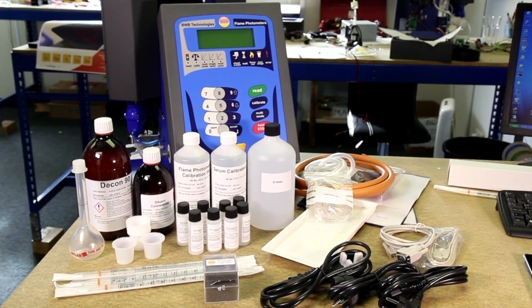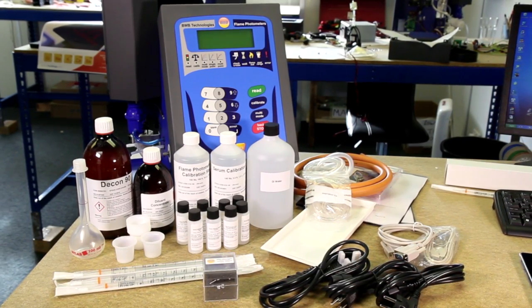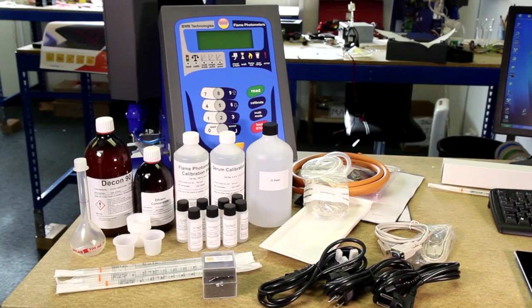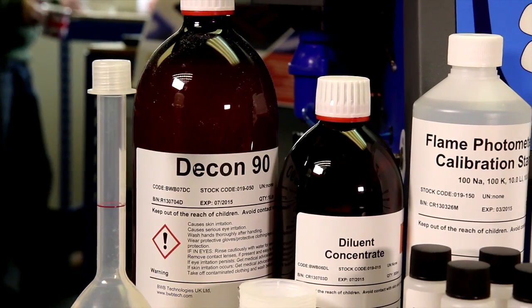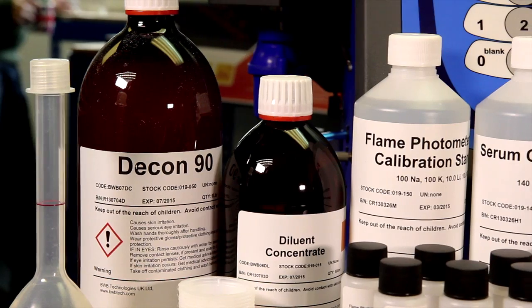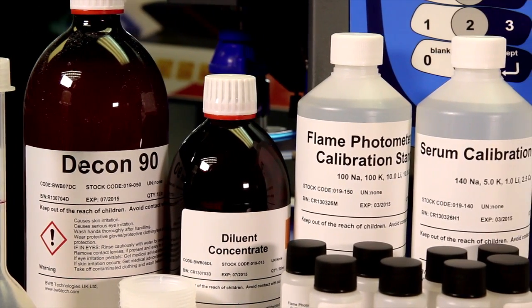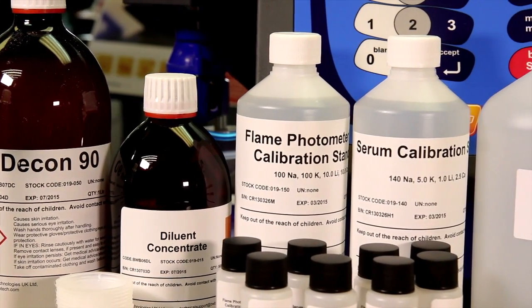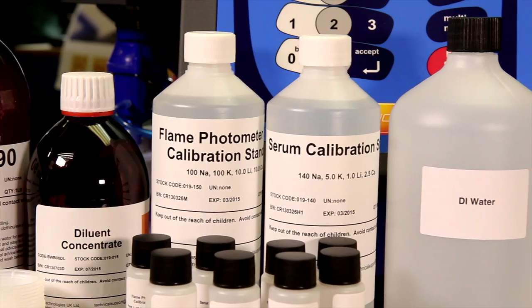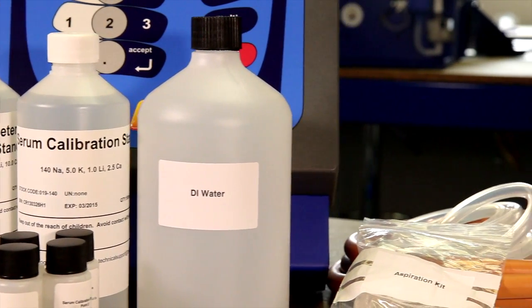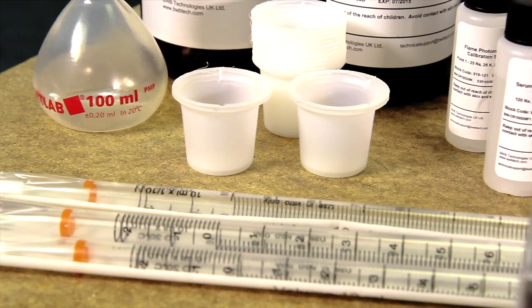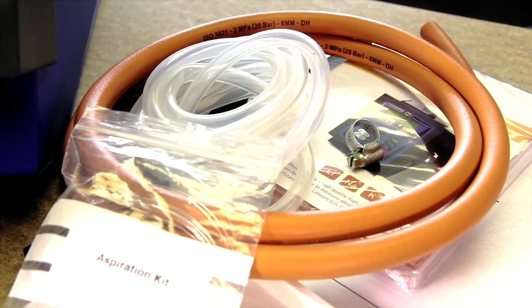Weighing just 15 kilos, the BWB bio flame photometer comes with a variety of accessories and solutions included in the box. The Decon 92% solution, the Brill 35 1% solution more commonly referred to as the diluent, 11 standard bio calibration fluids for setting up serum and urine calibration curves, volumetric flasks, sample cups, pipettes, waste tubing, gas hose and clamp.